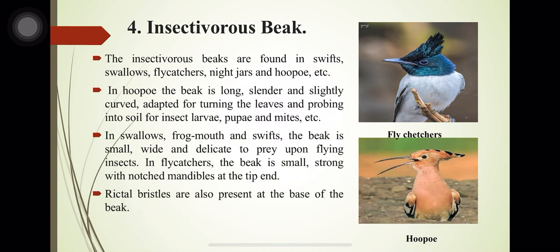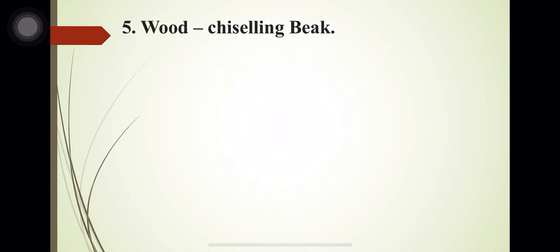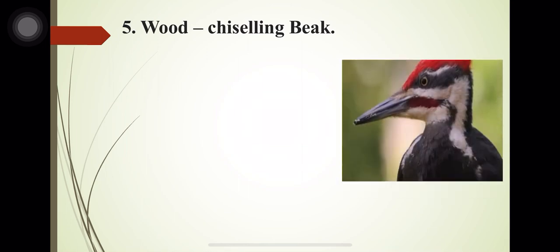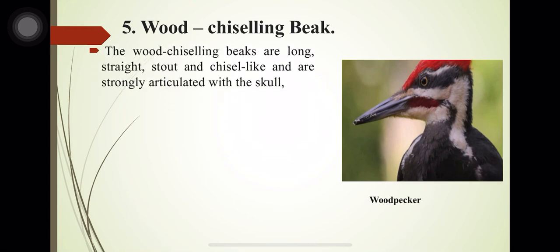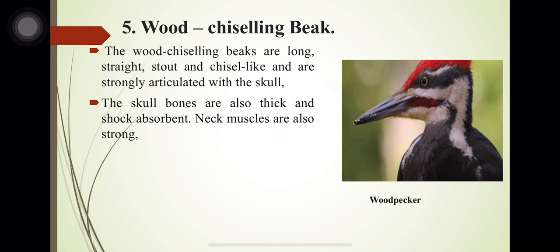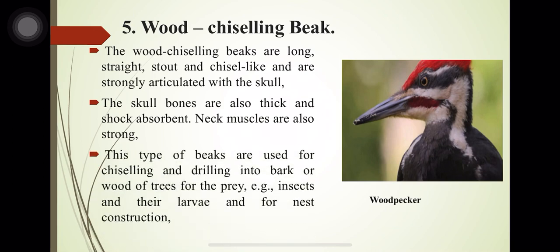The wood-chiseling beak is found in woodpeckers. The beak is long, straight, stout and chisel-like, and is strongly articulated with the skull. The skull bones are also thick and absorbent, and the neck muscles are strong. These beaks are used for chiseling and drilling into the bark or wood of trees.